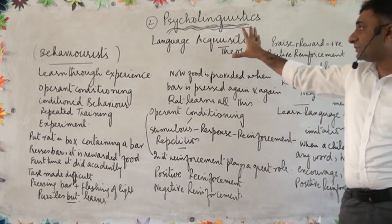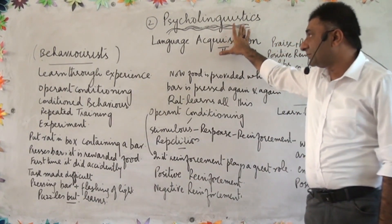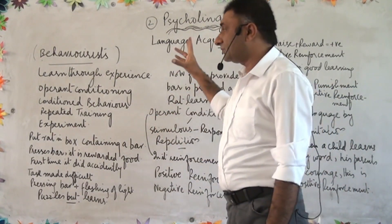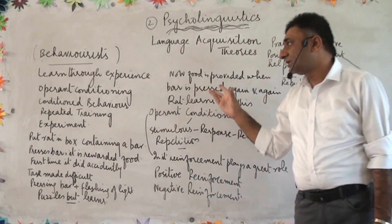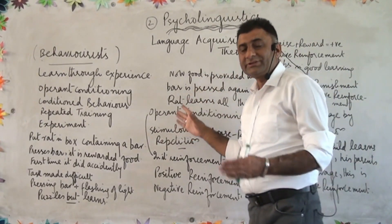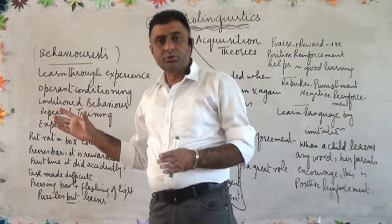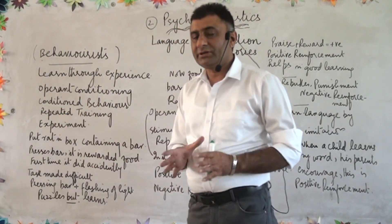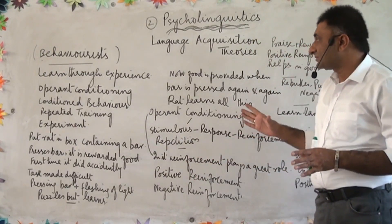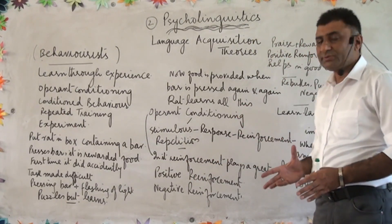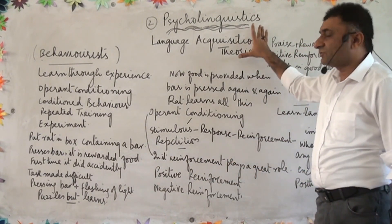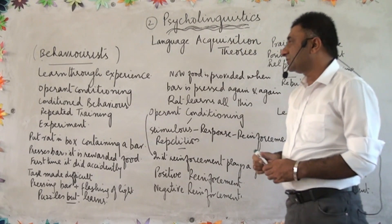This lecture is focused upon psycholinguistics. There are two theories about language acquisition. Psycholinguistics is concerned with how children and newborn babies acquire and learn their first language. Where native language acquisition is concerned, there are two important types of theories, called language acquisition theories.